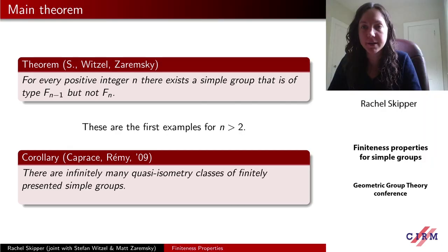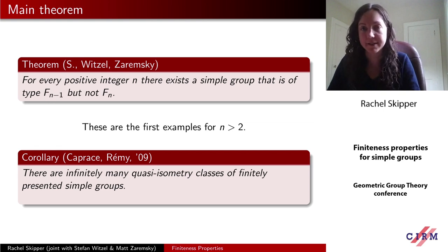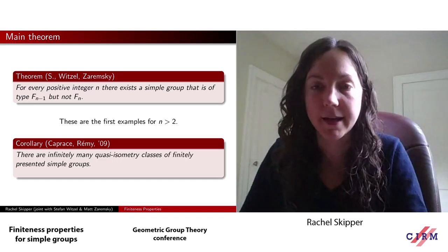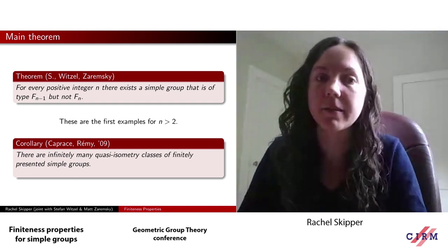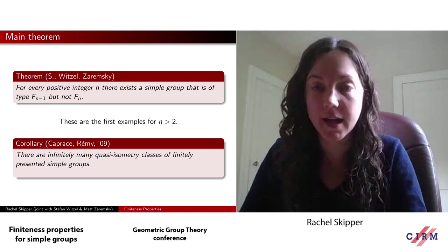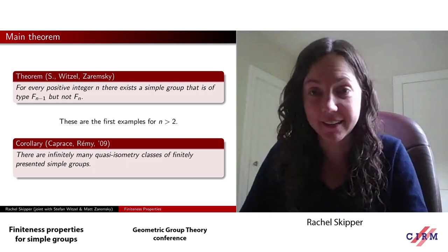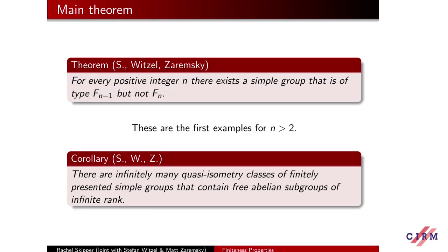As I said previously, because of Alonso's result, this gives us an infinite family of quasi-isometry classes of finitely presented simple groups. This is not the first family — the first family was actually given by Caprace and Rémy. Caprace and Rémy in 2009 showed that there were infinitely many QI classes of finitely presented simple groups. It's not so hard to distinguish our examples from those of Caprace and Rémy. Caprace and Rémy's groups have finite asymptotic dimension, whereas the groups we're building contain the Higman-Thompson groups, which all contain free abelian subgroups of infinite rank, meaning they necessarily have infinite asymptotic dimension. So in particular, none of our examples are quasi-isometric to any of the examples studied by Caprace and Rémy.